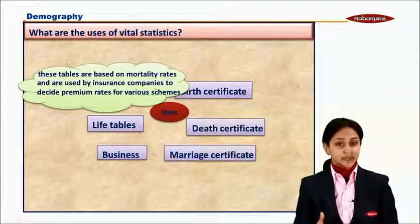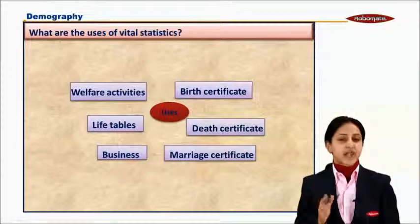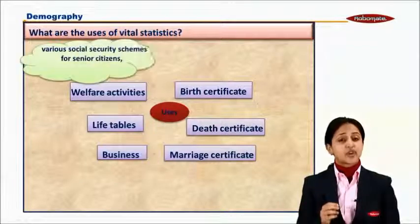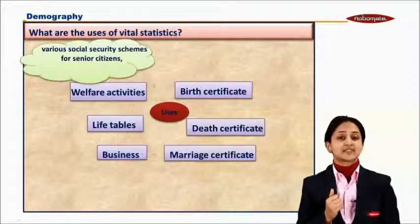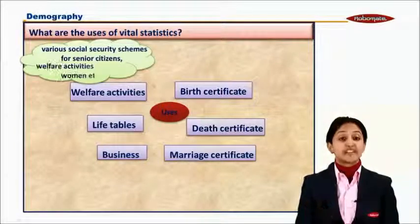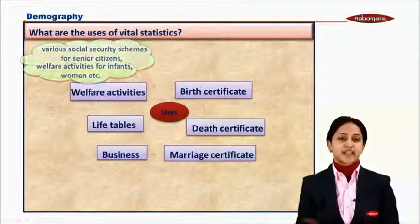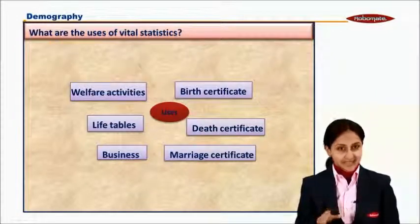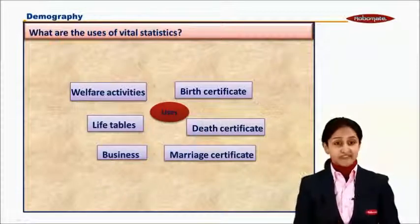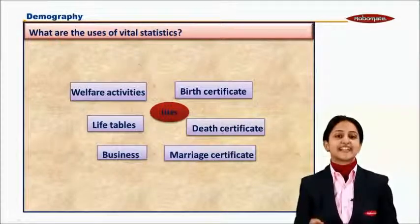These being the very important uses of vital statistics, let's look at the last but not least — welfare activities. Government and various social organizations use vital statistics to decide social security schemes for senior citizens, welfare schemes for children, for women, for infants, and so on. So these are the very important uses of vital statistics. In this chapter, we saw how demography is measured — that is, size, structure, and composition — with the help of vital statistics.